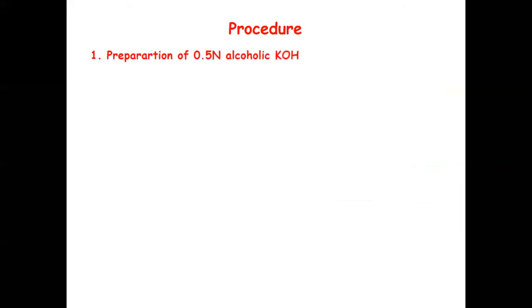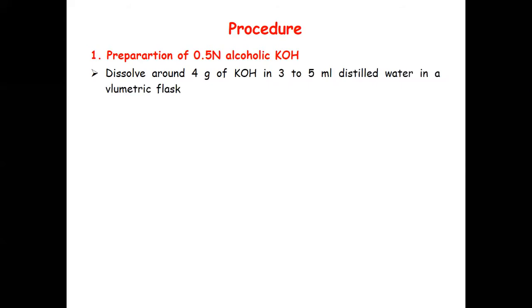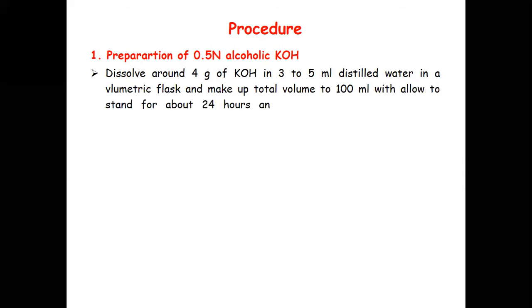Procedure, step one: preparation of 0.5 normal alcoholic KOH. Dissolve around 4 grams of KOH in 3 to 5 ml of distilled water in a volumetric flask and make up the total volume to 200 ml. Allow to stand for 24 hours and separate out the clear liquid by decantation.